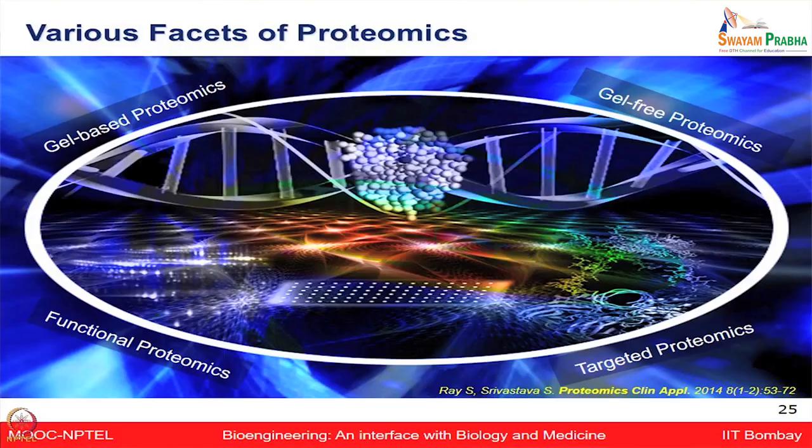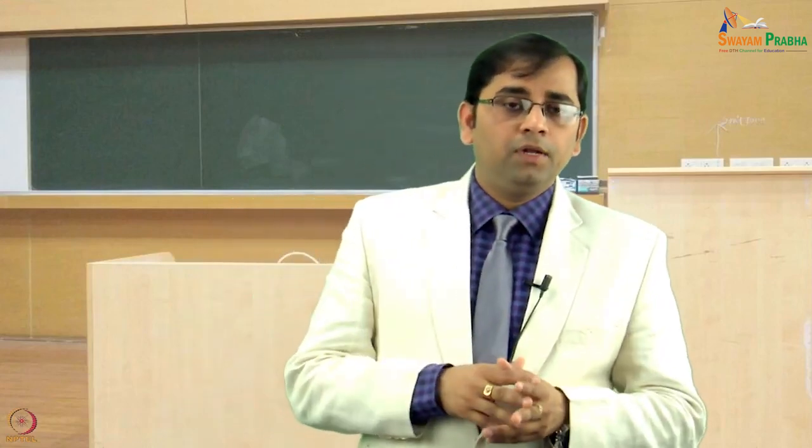Functional proteomics aims to understand the function of a given protein, and different types of functional technologies including microarrays, surface plasmon resonance, etc., have been very helpful for functional proteomic analysis. Then it comes to targeted proteomics, where you have identified given peptides or protein sequences and you want to only look into those specific targets — selectively analyzing those peptides from a complex sample — rather than looking at all remaining millions of peptides.